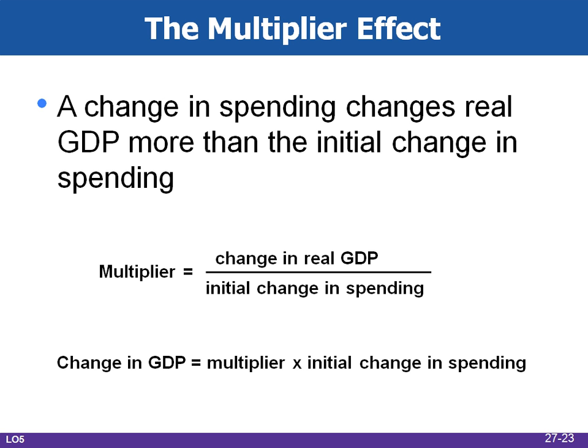Changes in spending ripple through the economy to generate even larger changes in real GDP — this is called the multiplier effect, the third and most important section of this chapter. The multiplier equals the change in real GDP divided by the initial change in spending, or equivalently: change in real GDP equals the initial change in spending times the multiplier. The initial change in spending is usually associated with investment because it is so volatile, but changes in consumption, net exports, and government purchases are also subject to the multiplier effect. The multiplier works in both directions — up or down — because of the interconnectedness of the economy.